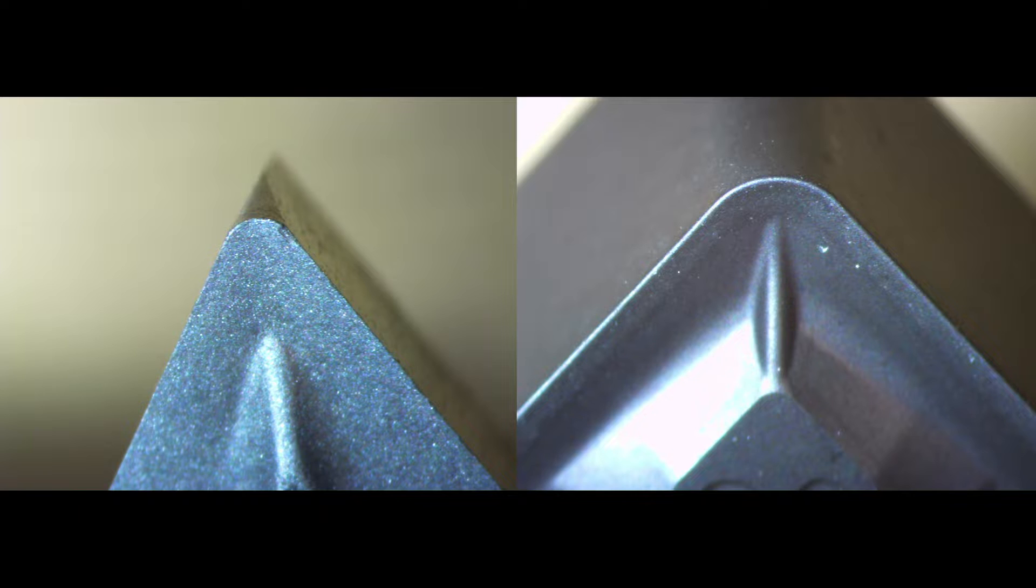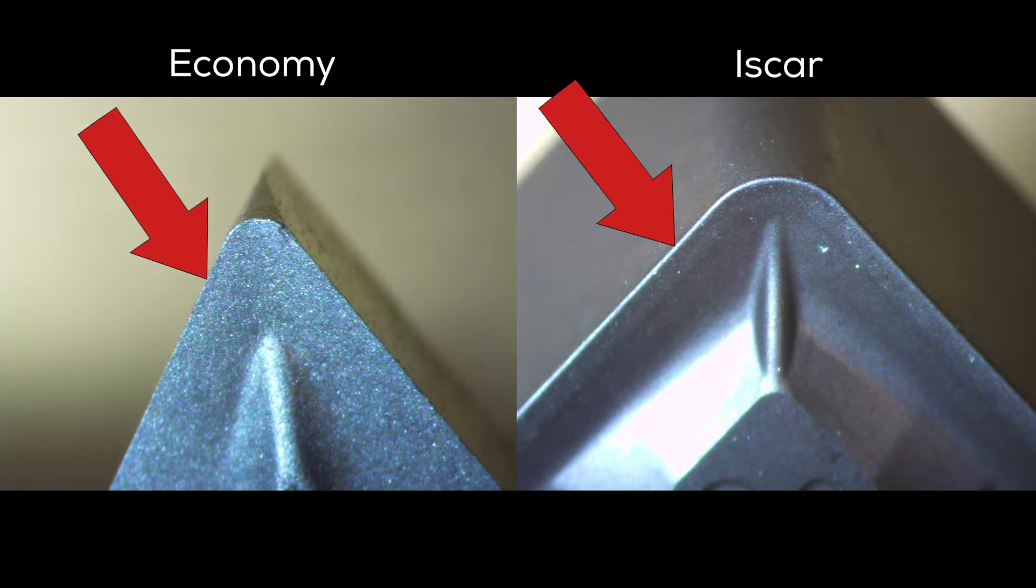Now, I'm not a carbide whisperer by any means, but I do think there are a couple of aspects of the design of the Iskar insert on the right that make it better suited for this job compared to the Economy insert on the left. For one thing, the actual cutting edge on the Iskar insert isn't nearly as thin, which makes it quite a bit stronger. In addition, the Economy insert doesn't have any coating, and I can't find any information about the actual carbide substrate.